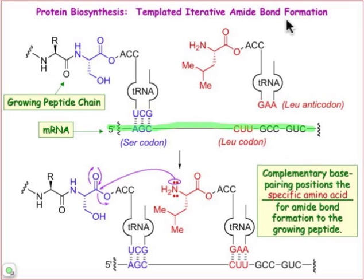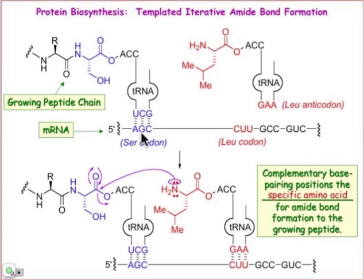The key organic step is amide bond formation. As far as the recognition part of this recognition and reactivity that must take place to maintain high fidelity of protein sequence, the recognition part is the recognition that takes place between the messenger RNA's codon and the transfer RNA's anticodon.